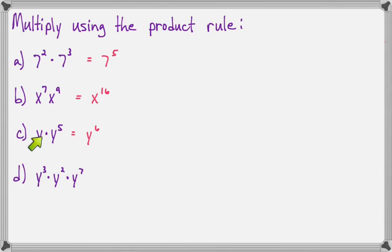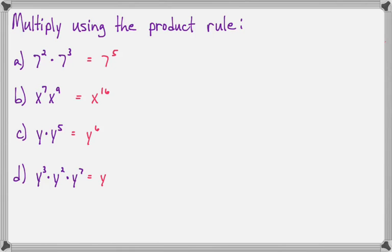Just know that if there's not an exponent written, you assume it's a 1. y to the third times y squared times y to the seventh — the base will be y, and 3 plus 2 plus 7 will be 12. And that is the product rule for exponents.